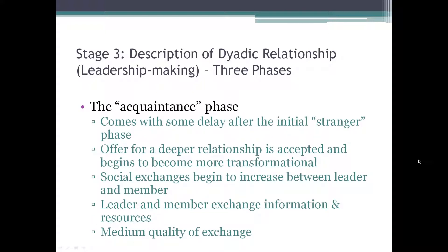The acquaintance phase comes with some delay after the initial stranger phase and happens when the leader and member start getting to know each other. The leader offers a deeper relationship, which is accepted by the follower, and this begins to make the transactional exchange into more of a transformational exchange. Social exchanges begin to increase — they're not just work exchanges but personal exchanges too. The leader and member exchange information and resources at both personal and work levels, constituting a medium quality of exchange.